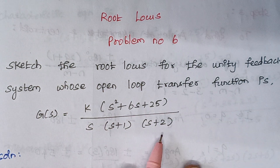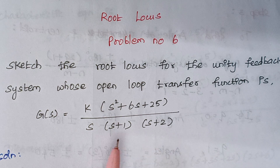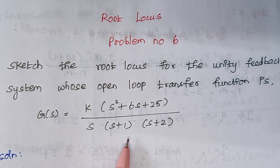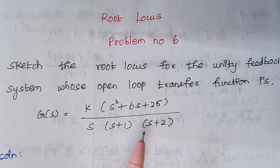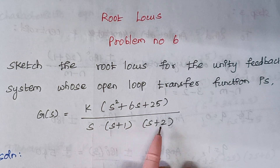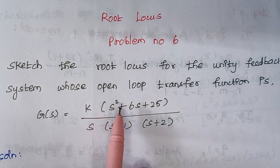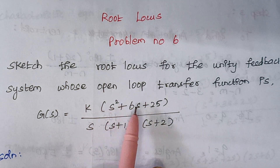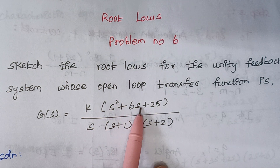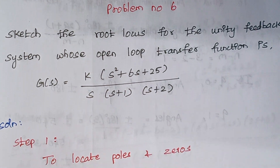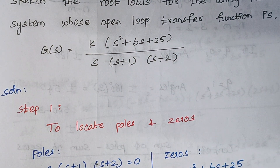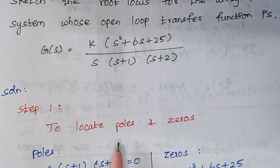This is the given transfer function. From the transfer function we can tell how many poles and zeros there are. In the denominator we have three terms, so we will be having three poles. When you look at the numerator term, it is a quadratic equation, therefore we will be having two zeros. Now we start with step 1 to locate the poles and zeros, that is, we have to find their values.